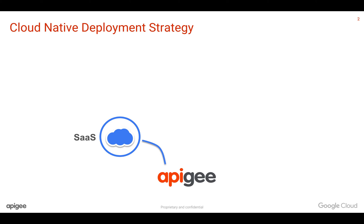maintaining the infrastructure or scaling it up and down, because Apigee manages all the hosting and users focus on building API programs. Apigee SaaS is today available both on Google Cloud as well as AWS. If you choose Google Cloud, there are certain advantages that you can leverage from Google, which Apigee is part of.